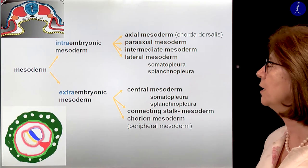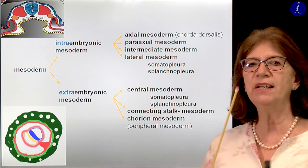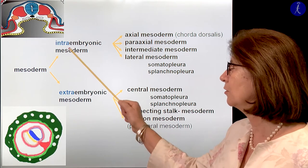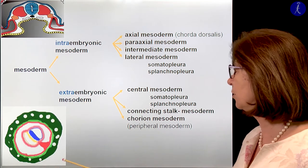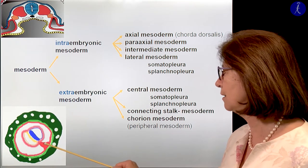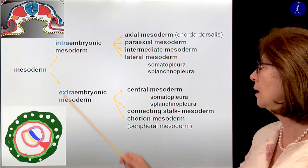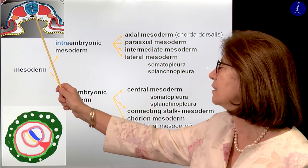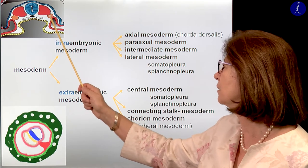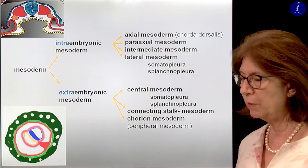This picture summarizes what we know from the mesoderm. We have two big parts: the extraembryonic mesoderm and the intraembryonic mesoderm. In the extraembryonic mesoderm you have the central mesoderm, the connecting stalk mesoderm, and the chorionic mesoderm on the periphery. The intraembryonic mesoderm is divided into the axial mesoderm (that's the notochord), the paraxial mesoderm, the intermediate mesoderm, and the lateral plate mesoderm, which has the somatopleura and the splanchnopleura.